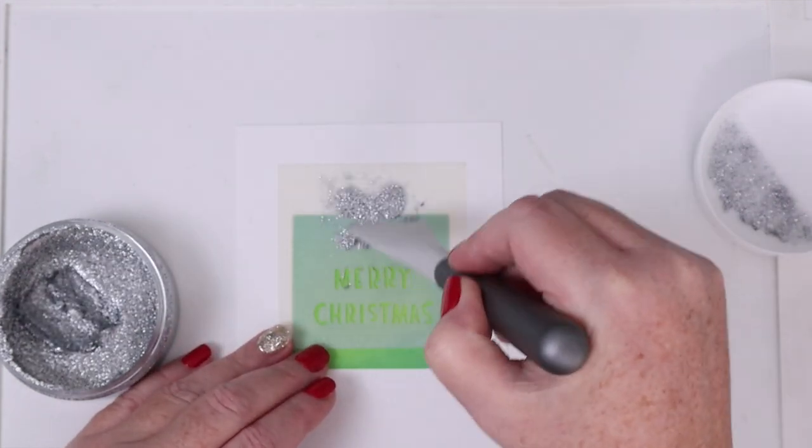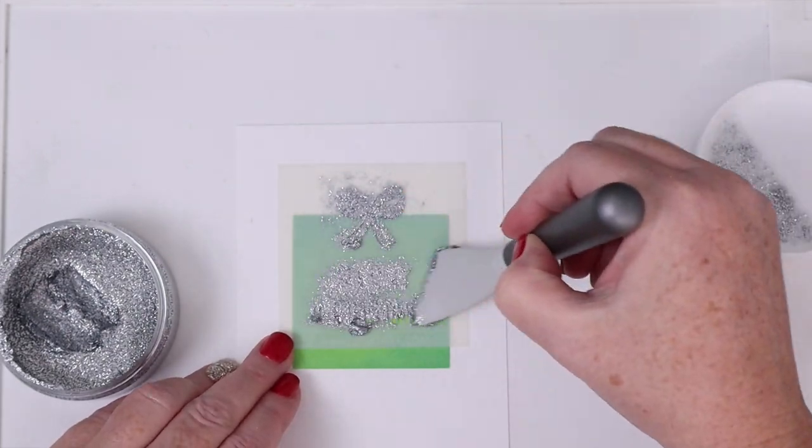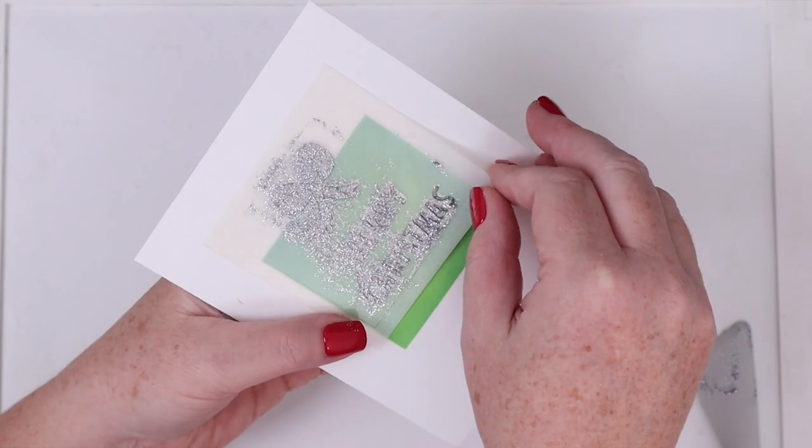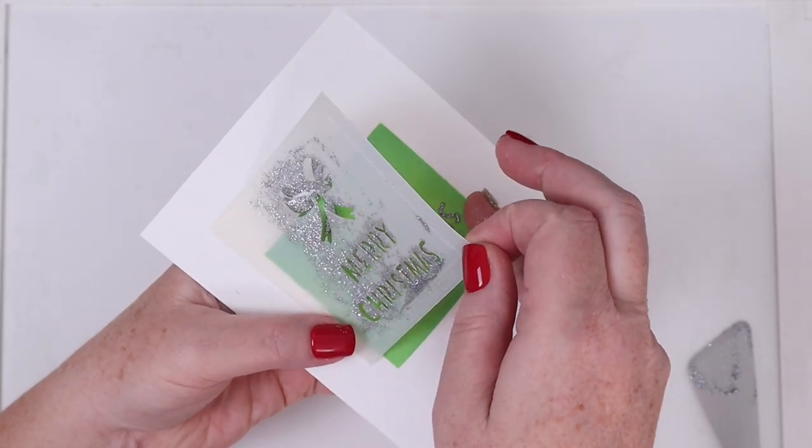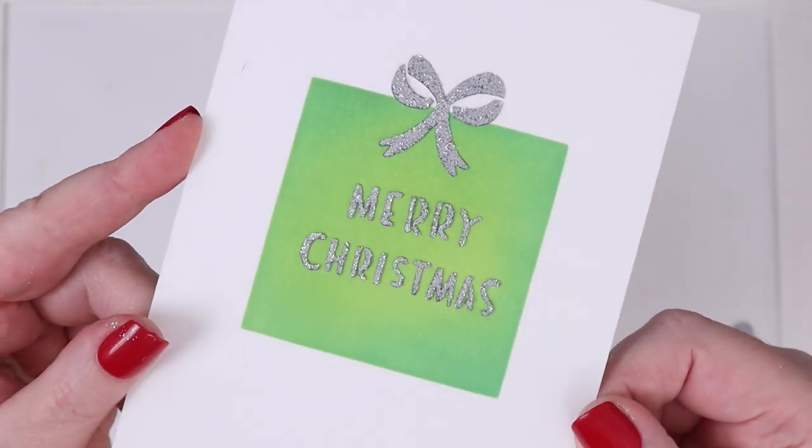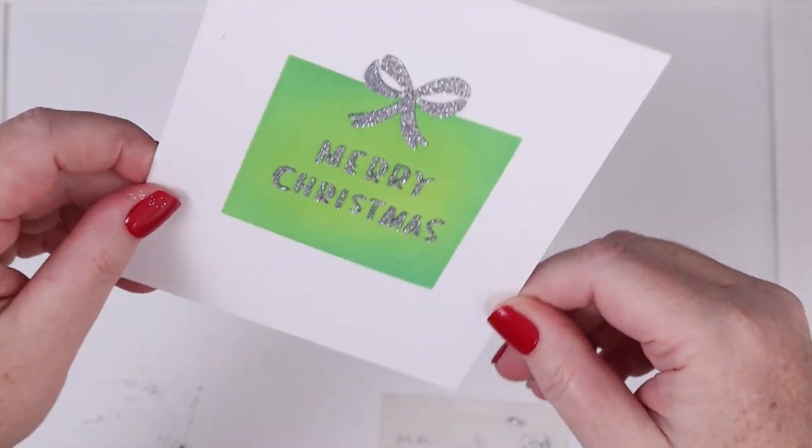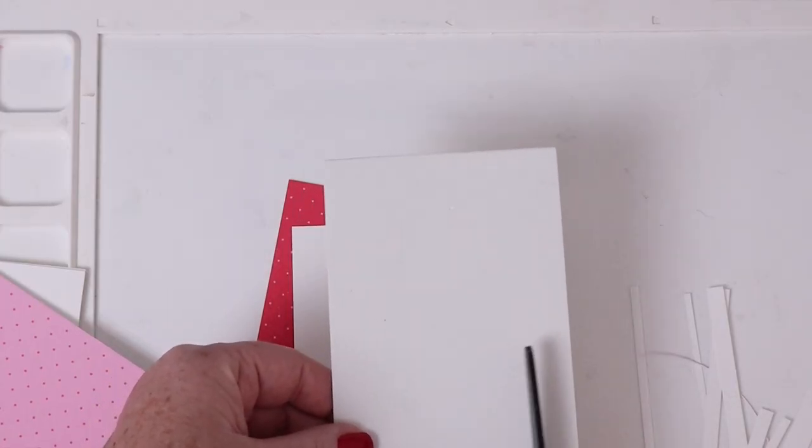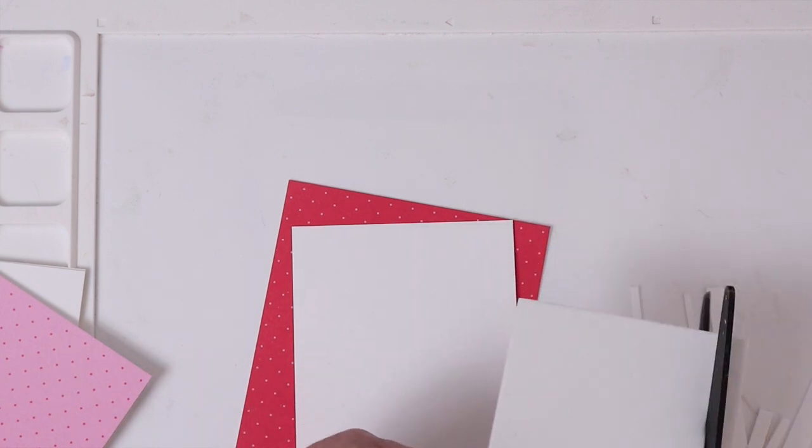Just scoop some of the gel out with a spatula and spread it over the stencil. The glitz does not have to be applied very thick, but the thicker you apply it the more dimensional it will dry - may take a little bit longer to dry, but the outcome is absolutely fantastic. I'm applying just one color, but you could use a different color of glitz for the sentiment or the bow if you choose.